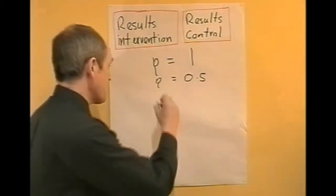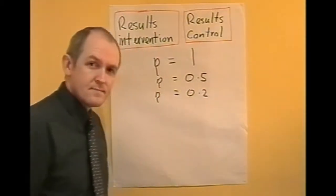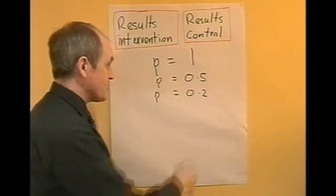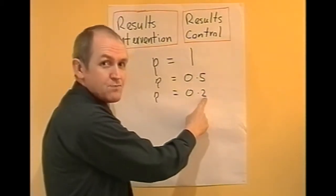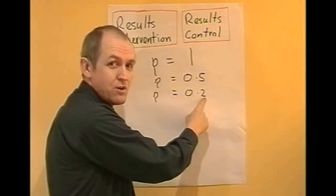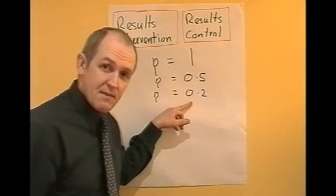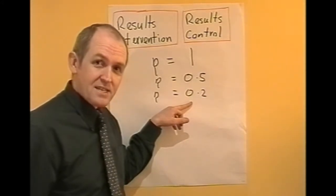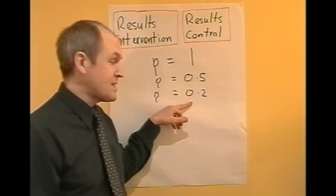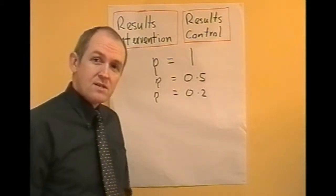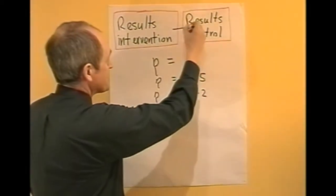Suppose p equals 0.2. The p-value expresses the probability that the result arose by chance, so now there's only a 20% probability that the result arose by chance. In other words, there's an 80% probability that it is a genuine result and that there is a genuine difference between the two groups.